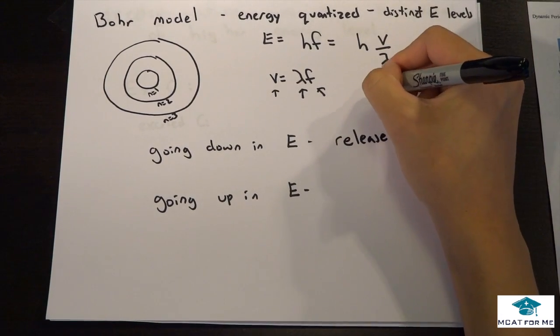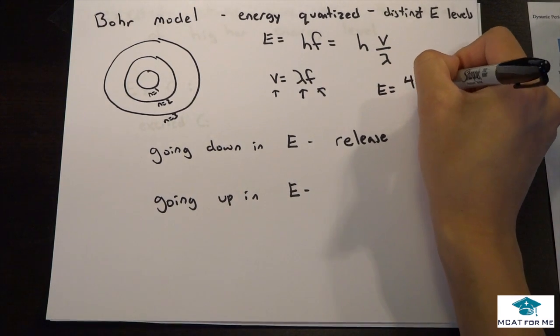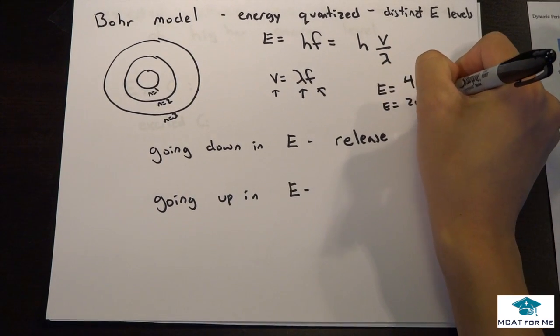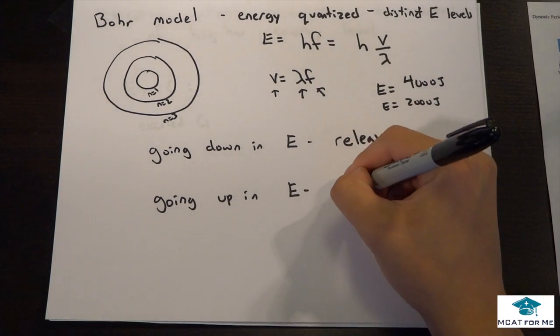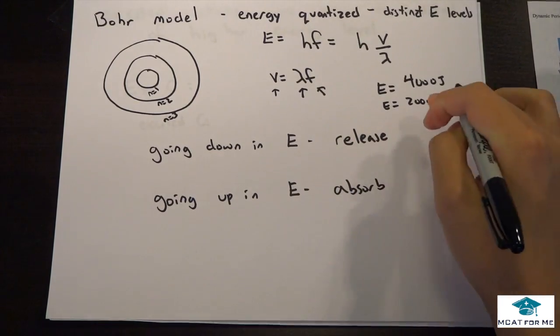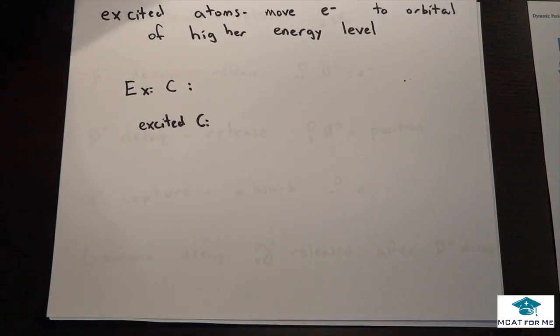So if we had something like energy was at 4,000 joules and we went down to energy equals 2,000 joules, well, where did those 2,000 joules go? And you know that energy is always conserved, so it had to have been released. And going up, we have to absorb those 2,000 joules in order to get to that 4,000. So it should be fairly intuitive.